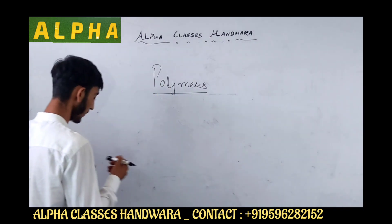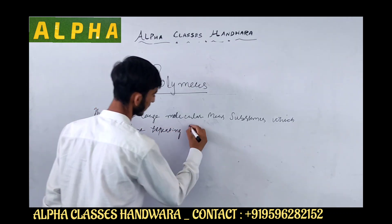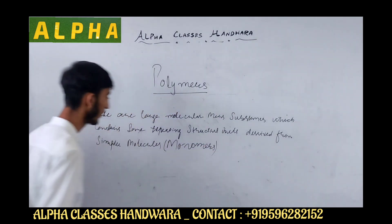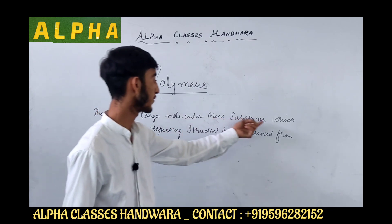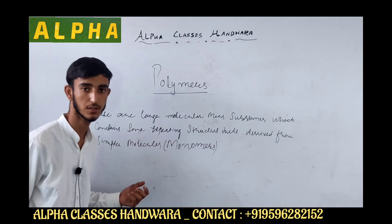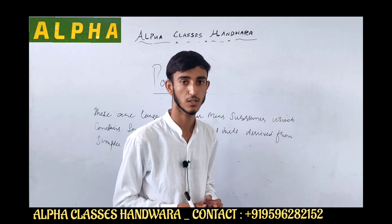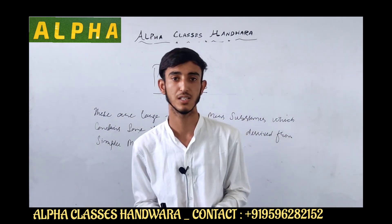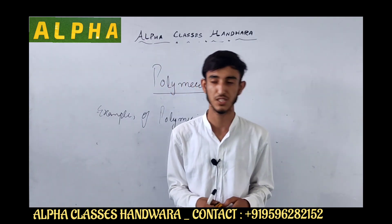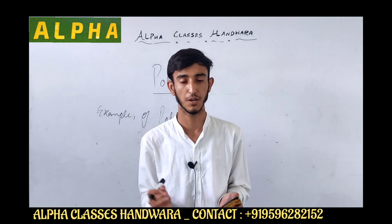I write here the definition of polymers: these are large molecular mass substances which contain same repeating structural units derived from simple molecules known as monomers. And the process by which monomers get converted into polymers is known as polymerization. Now let's see some examples of polymerization. For example, we will see polythene, which can be found in our day-to-day life — we are completely surrounded by polythene.